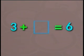Next! Three added to what number makes six? Three and three is six. Are there any other numbers that when added together give us a total of six? Yes! Zero added to six equals six.